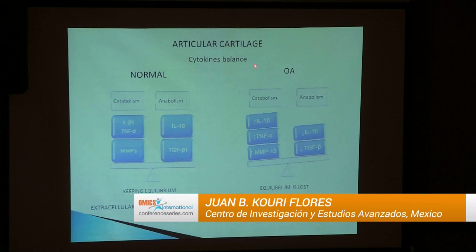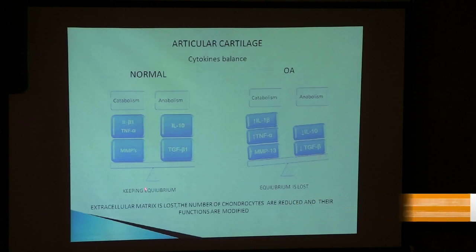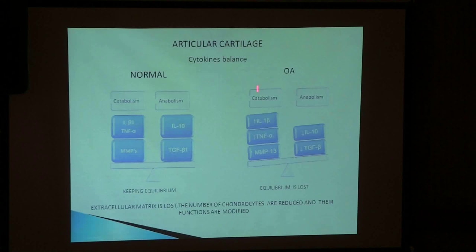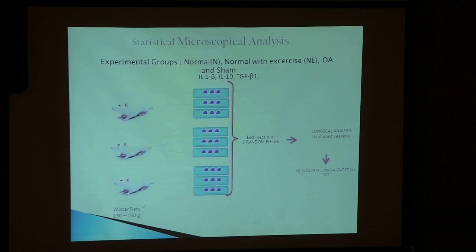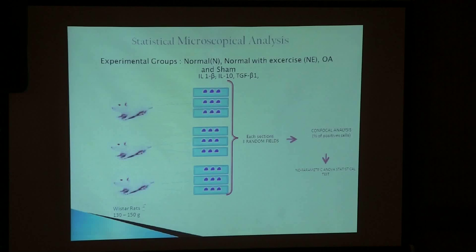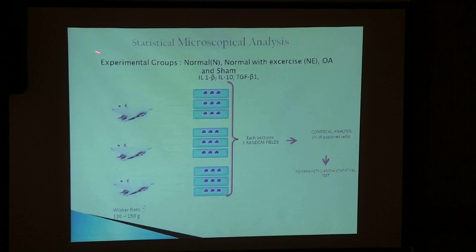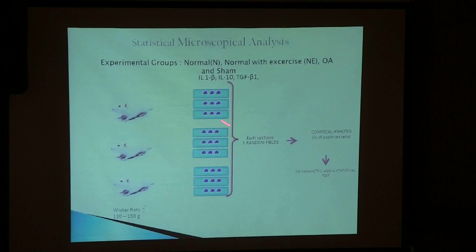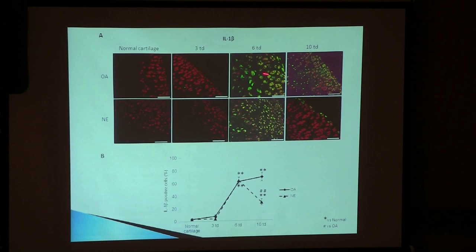Normally, cytokines — both catabolic and anabolic — maintain the equilibrium. In osteoarthritis, this shifts toward the catabolic molecules, and that's what we are going to demonstrate experimentally. It takes a lot of rats, but if you see, it's exactly the same we can see in humans. We did electron microscopy, confocal microscopy, all types of microscopy, and also statistical analysis from three groups — three samples, three slides — for all the immunohistochemistry, showing how different molecules change.